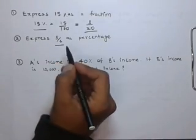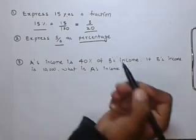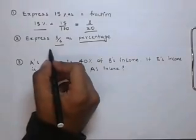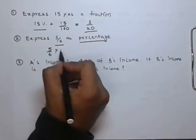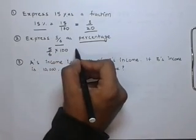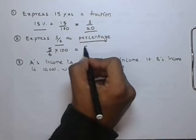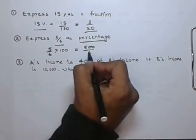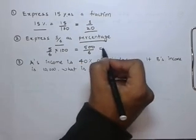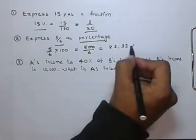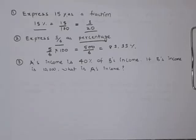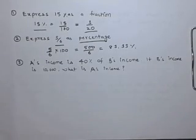Similarly, a fraction can be written in percentage form by multiplying it by 100. For example, 5 by 6 into 100 equals 500 upon 6, which is 83.33%.